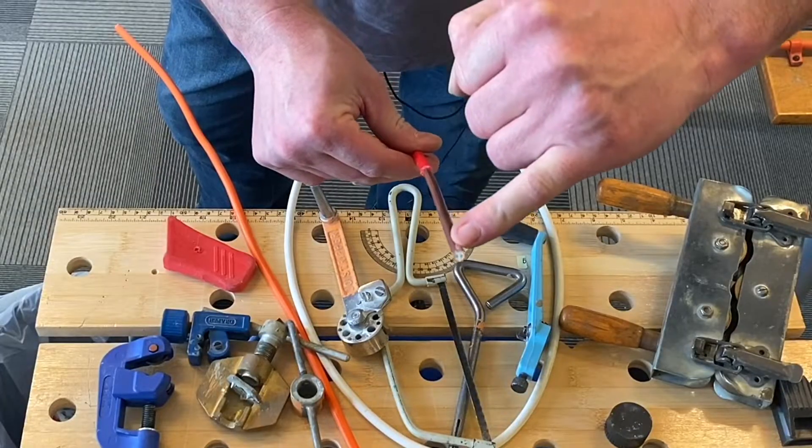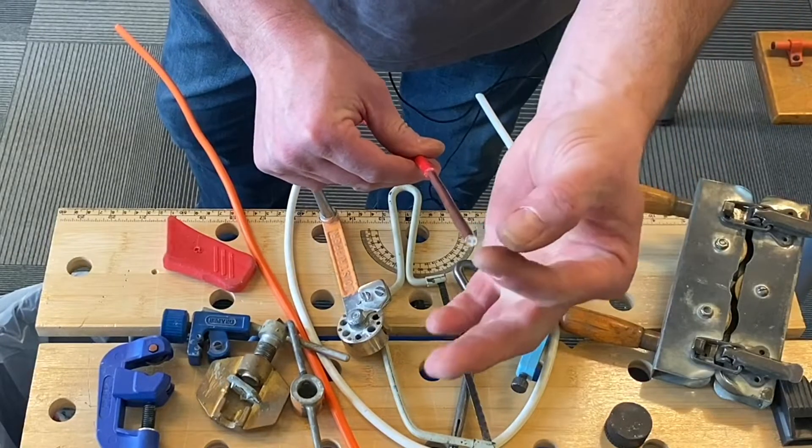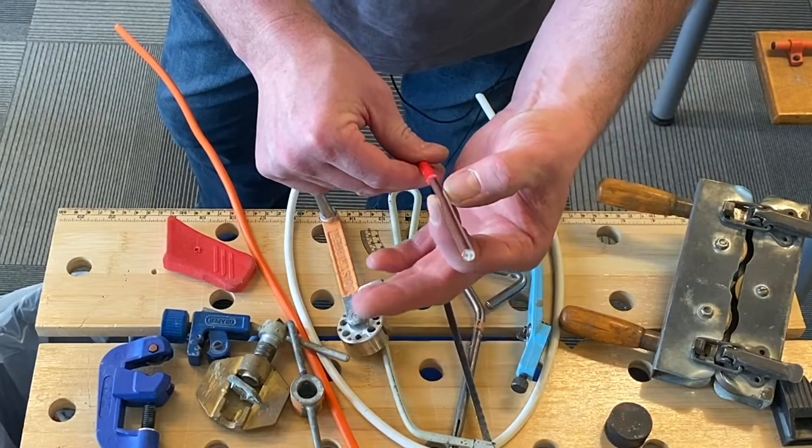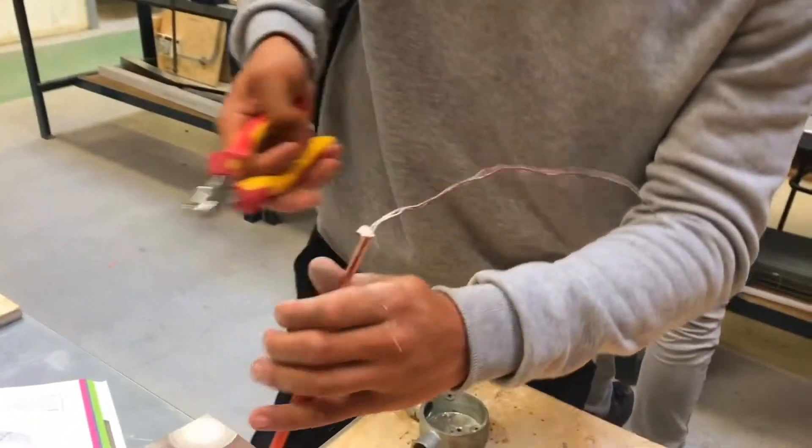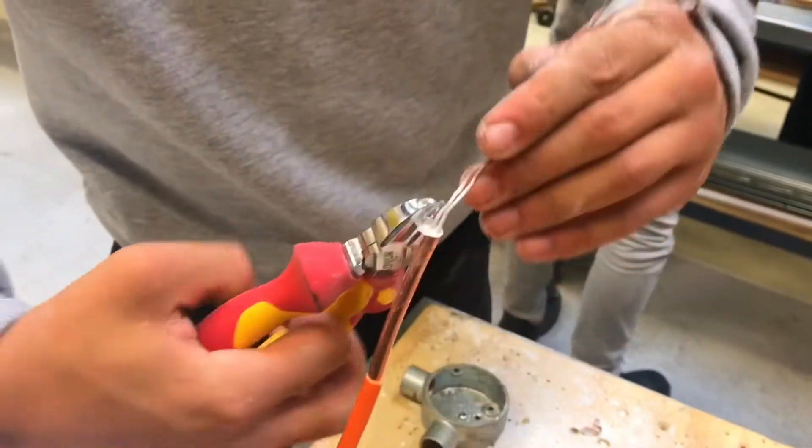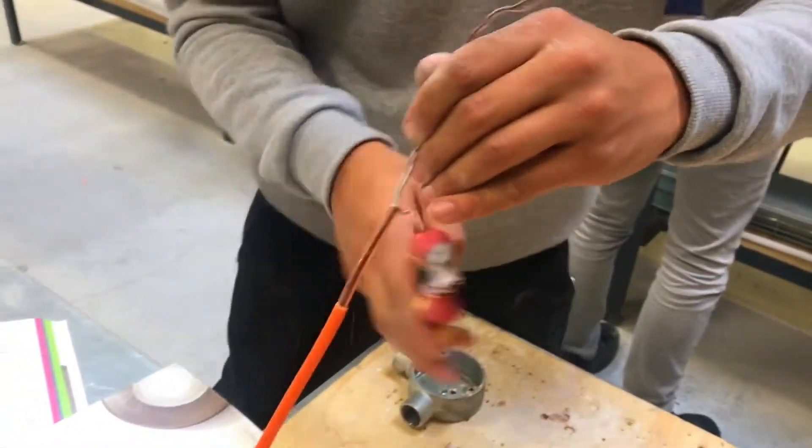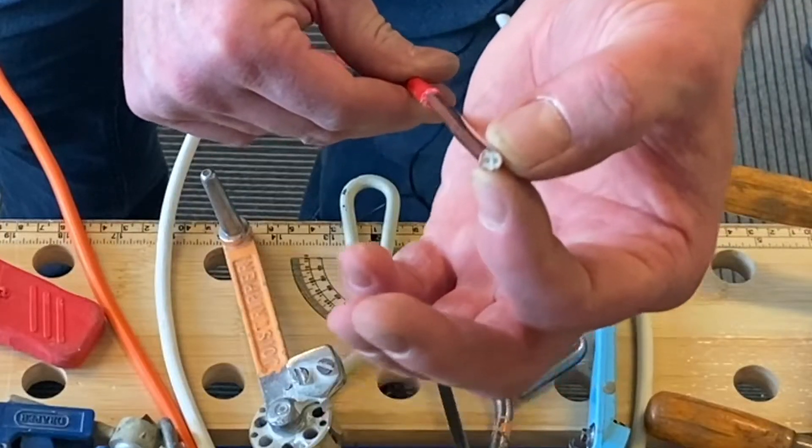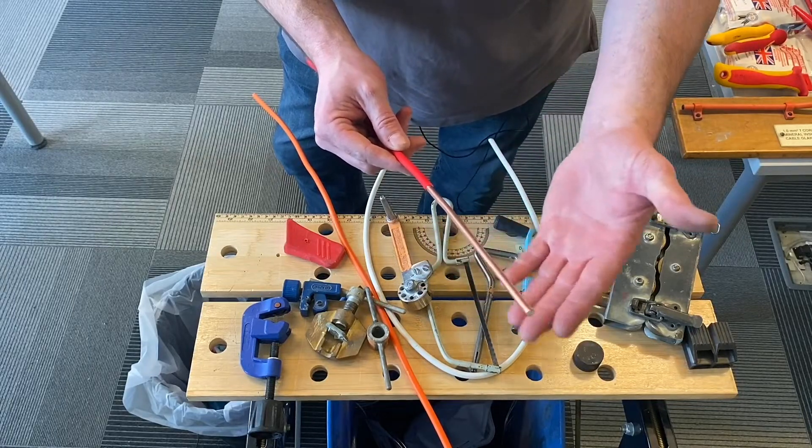It has two conductors in it, so we've got a line and neutral. The outside part here will provide our protective conductor - it's a massive amount of copper, so it makes a fantastic CPC. The construction of the conductors in mineral insulated cable are always solid, never stranded. This is two core 1.5mm.